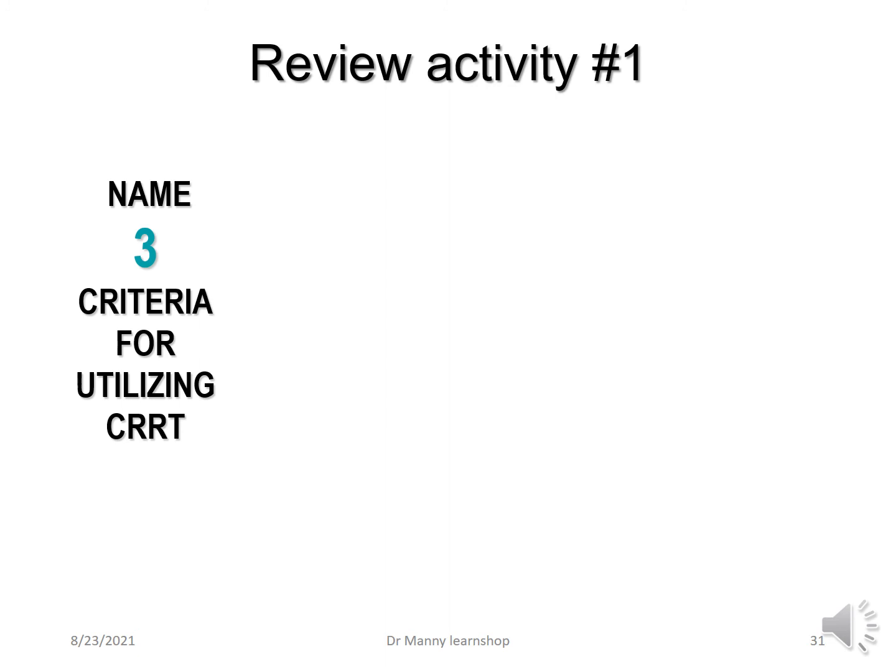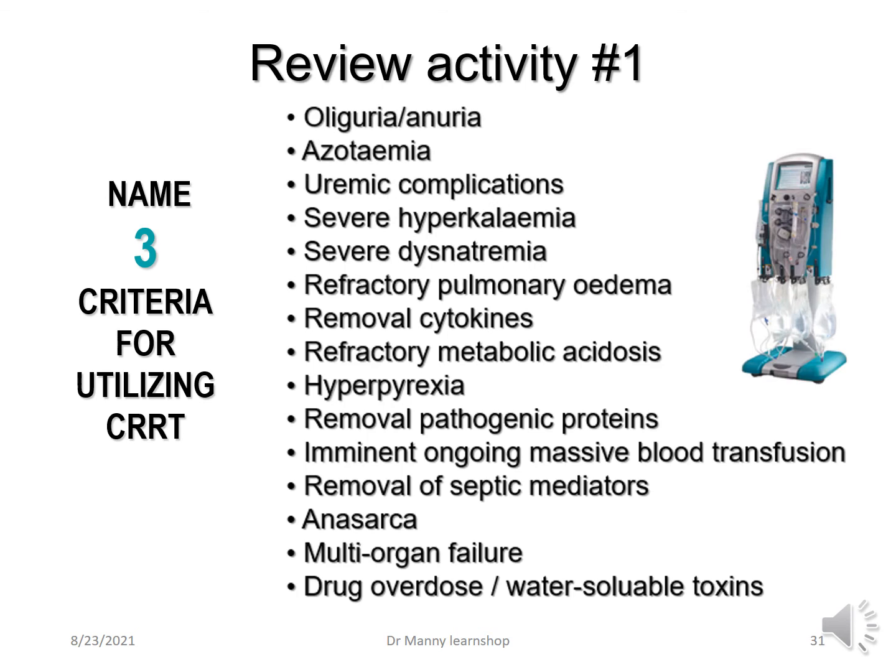Review question: name three criteria for utilizing CRRT. You only need three for consideration to commence CRRT. These include oliguria, anuria, azotemia, uremic complications, severe hyperkalemia, severe dysnatremia, refractory pulmonary edema (cardiogenic or pulmonic), removal of toxic cytokines, refractory metabolic acidosis, hyperpyrexia, removal of pathogenic proteins, imminent ongoing massive blood transfusions in critically ill patients, removal of septic mediators such as cytokines, anasarca, multi-organ failure, and drug overdose with water-soluble toxins.